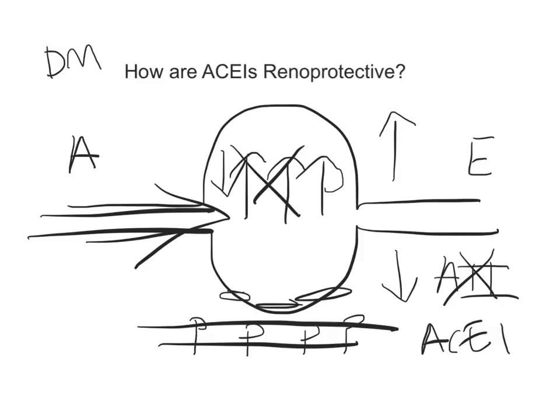You're starting with a high pressure state in the kidney, and by giving an ACE inhibitor, you are reducing that pressure and alleviating the proteinuria.